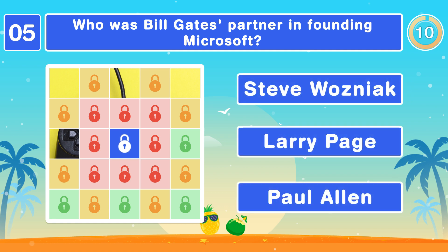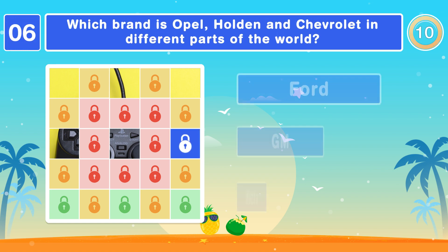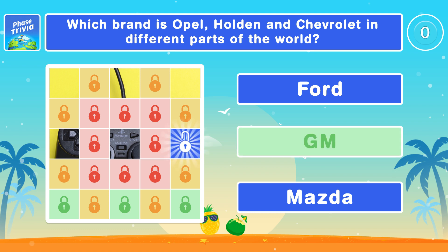Who was Bill Gates' partner in founding Microsoft? It was Paul Allen. Which brand is Oppo, Holden, and Chevrolet in different parts of the world? GM.